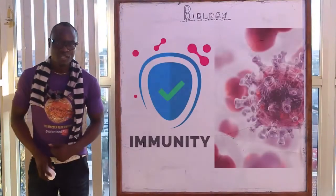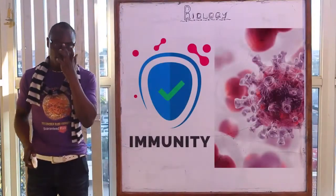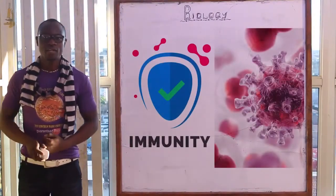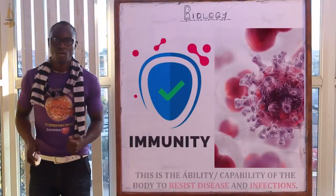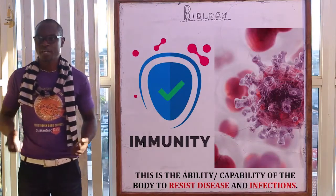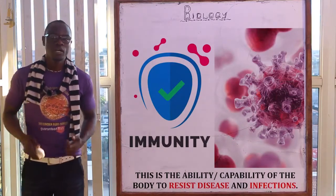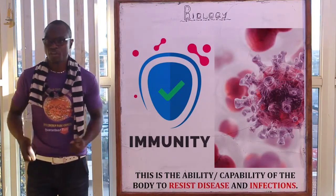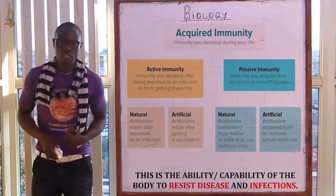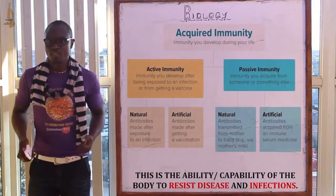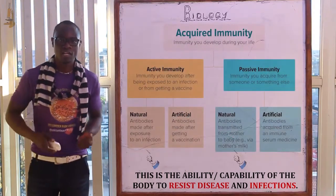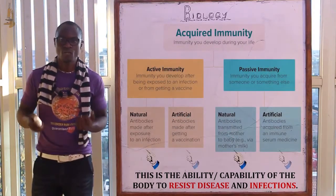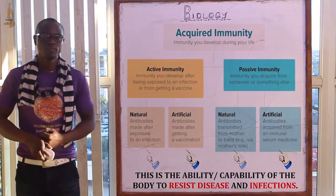Welcome to this class where we are going to discuss immunity. Immunity is the ability of the body to resist diseases or infections. There are two types of immunity: the first type is natural immunity, and the second type is acquired or artificial immunity.